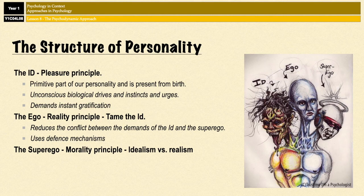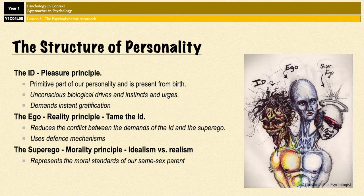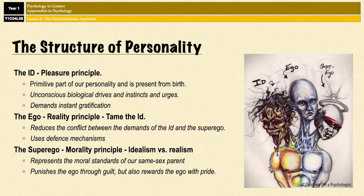The final part of personality is the superego. The superego is formed at the end of the phallic stage of psychosexual development, around the age of five. It's our internalized sense of right and wrong, and it's based on the morality principle. It represents the moral standards of our same-sex parent, and it punishes the ego through feelings of guilt, but also rewards the ego with pride when it does something correct. Effectively, the superego tries to perfect and civilize our behavior, working hard to suppress all the unacceptable urges of the id, and it tries to make the ego act upon idealistic standards rather than realistic principles.